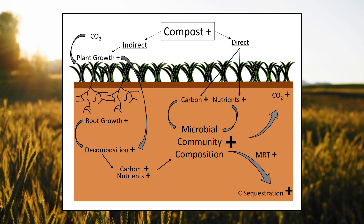Soil carbon sequestration is the process of removing carbon dioxide from the atmosphere and storing it in the soil as soil organic carbon. Plants uptake atmospheric CO2, process these molecules within their biomass, and when the dead plant material decomposes, that carbon becomes incorporated into the soil. Microbial communities are stimulated by this increased nutrient availability, and their activity both releases CO2 back to the atmosphere as a byproduct of their respiration and also stores soil organic carbon deeper within the soil profile, increasing the mean residence time of that carbon.